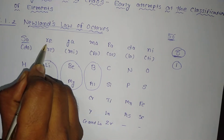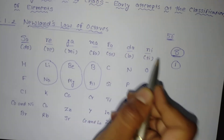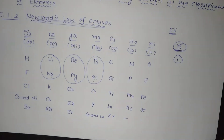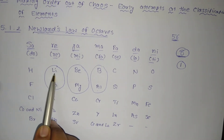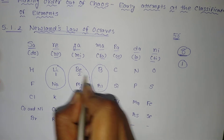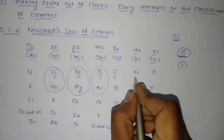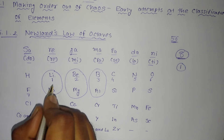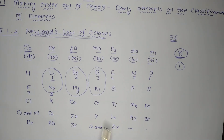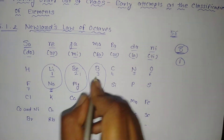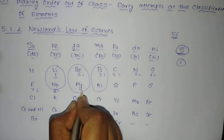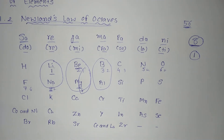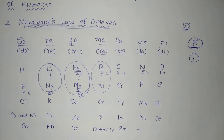Just as in music notes — Sa Re Ga Ma Pa Da Ni, or in Western: Do Re Mi Fa Sol La Ti — if we start with lithium as the 1st element, followed by beryllium (2nd), boron (3rd), carbon (4th), nitrogen (5th), oxygen (6th), fluorine (7th), and sodium as the 8th, you can see the 1st and 8th have similar properties. Similarly, beryllium and magnesium have the same property. This is how he classified elements on the basis of the musical note.